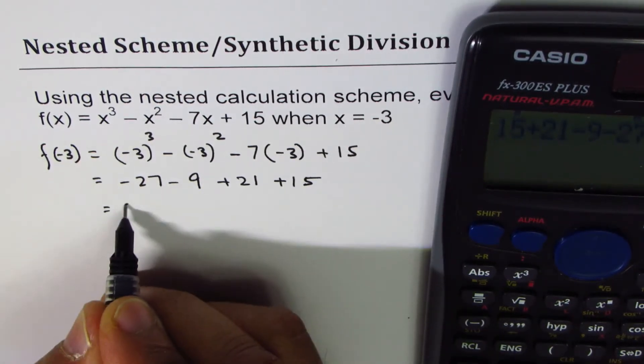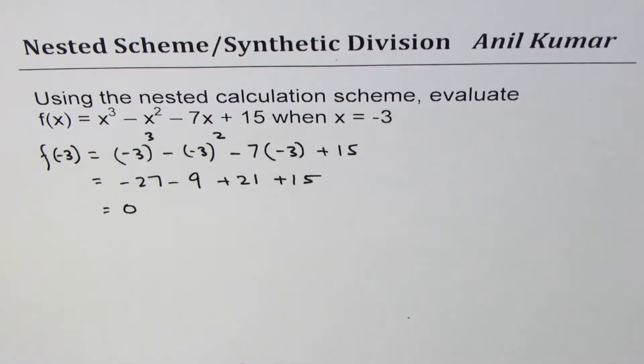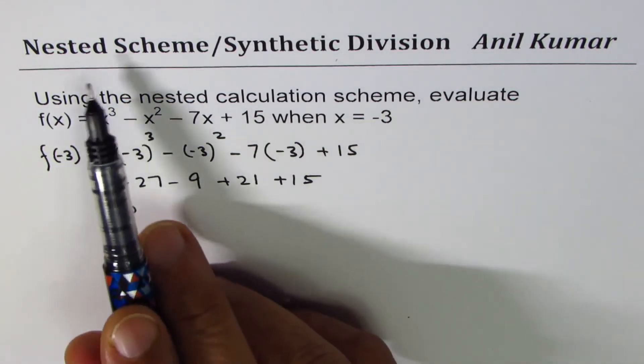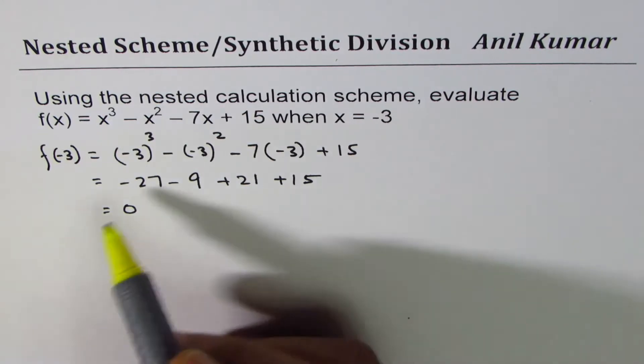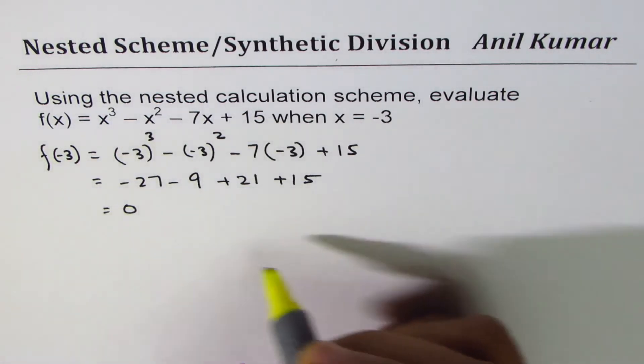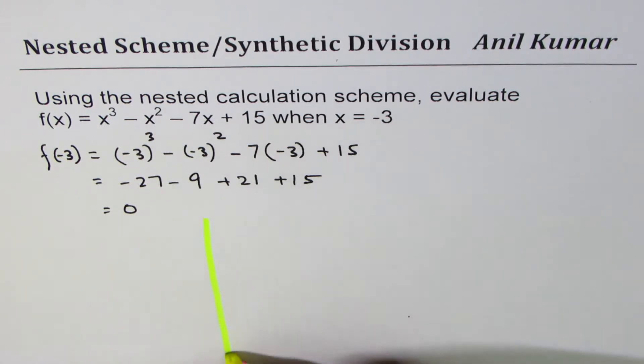So that gives us zero. That means we have a factor x + 3. Now let's use this nested scheme and understand how to use it. It is like synthetic division.